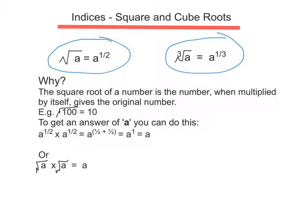Why is this so? Let's have a look at an example. The square root of a number is the number when multiplied by itself gives the original number. So in the example I've got the square root of 100 equals 10. Another way of writing that is 10 times 10 equals 100. When I multiply 10 by itself I get 100, so 10 is the square root of 100.